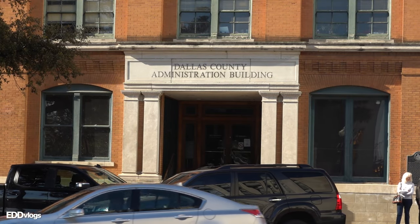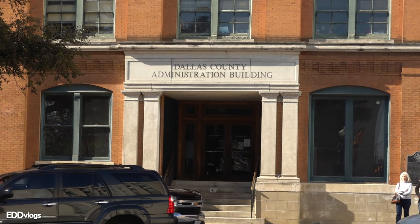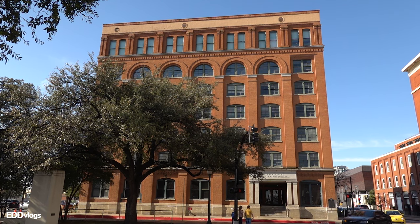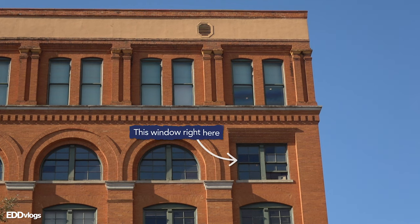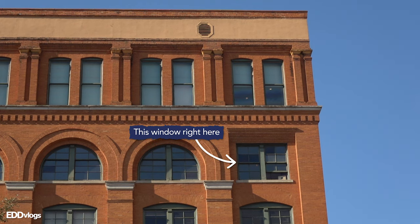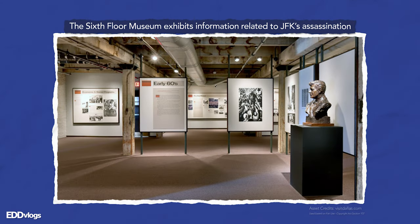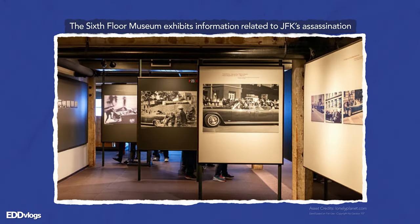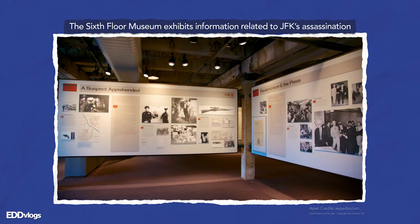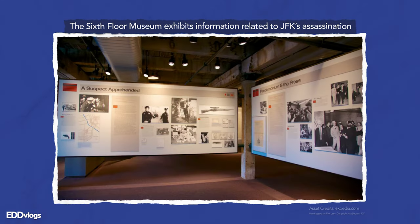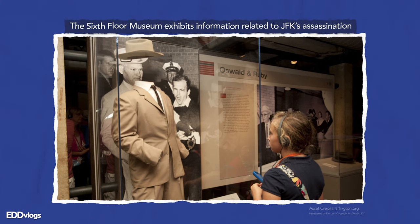Up next, we are visiting the Dallas County Administration building — that building you see behind me. That is the building from where Oswald is believed to have shot three times. The exact location from where he fired is the last window to the right on the sixth floor — that window right there. That floor is now the home of a museum that provides historical context for the events of November 22nd, 1963 and the aftermath of the assassination. It's another great place to visit if you want more details.